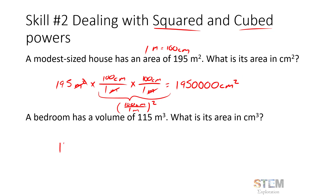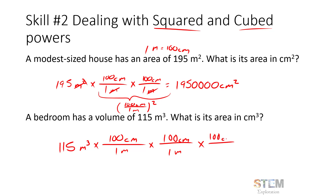For volume — same idea. A bedroom with a volume of 115 meters cubed converted to centimeters cubed uses the same conversion factor, but you must apply it three times: (100 centimeters / 1 meter) used three times, once for each power. So you go 115 × 100 × 100 × 100, which equals 115,000,000 — or 115 million — centimeters cubed.